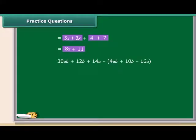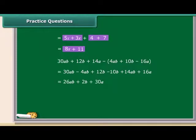Now, the question is to subtract 4ab plus 10b minus 16a from 30ab plus 12b plus 14a. We have to use the same criteria as we have used for the addition. Bring the like terms together, taking into consideration the sign of the terms. So on rearranging, we get 26ab plus 2b plus 30a.